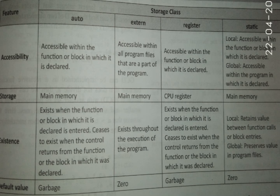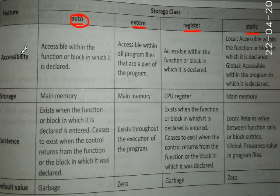This is a table which shows the accessibility, storage, existence, and default value of each storage class. The 1st storage class is auto, 2nd is external, 3rd is register, and 4th is static. First of all we will see about auto and its accessibility.